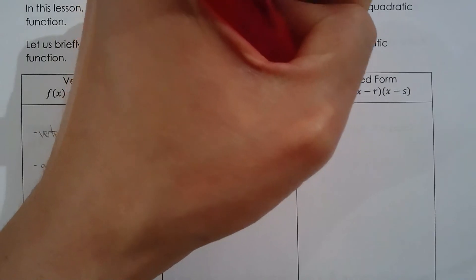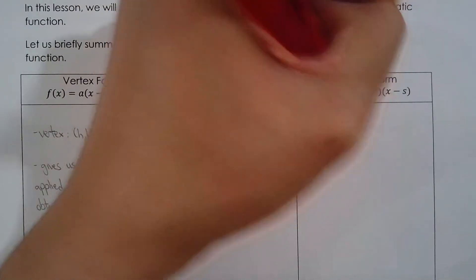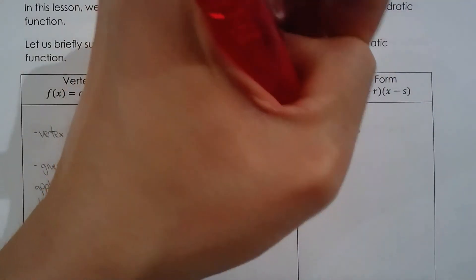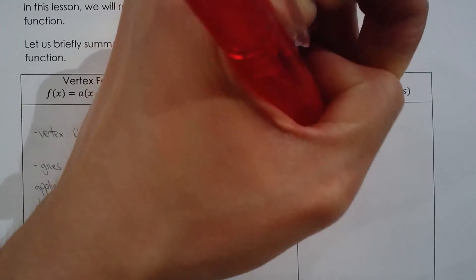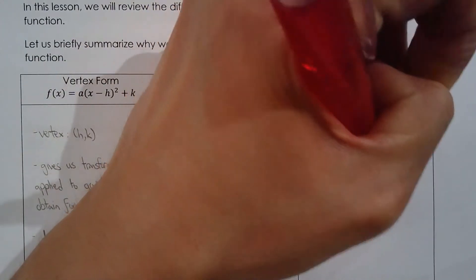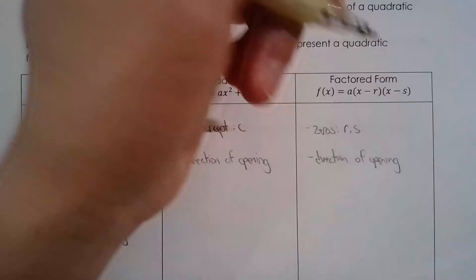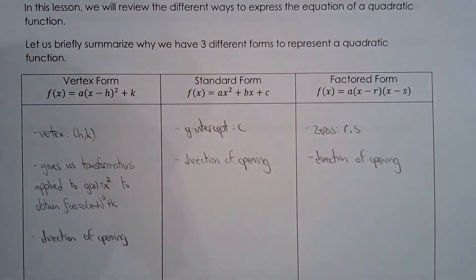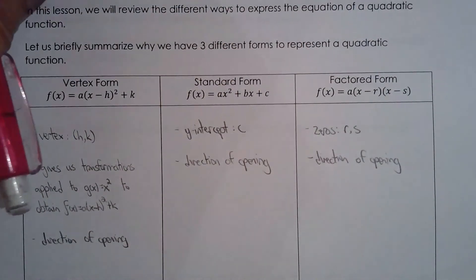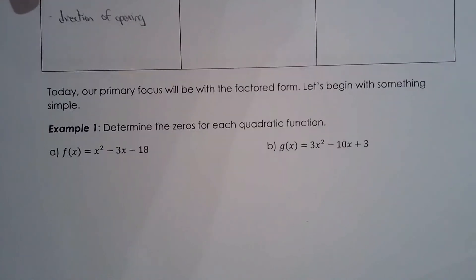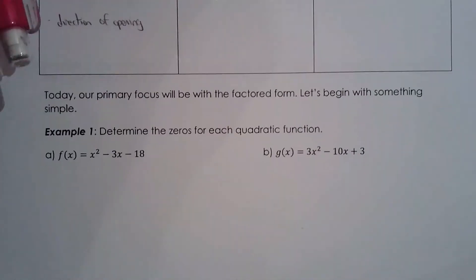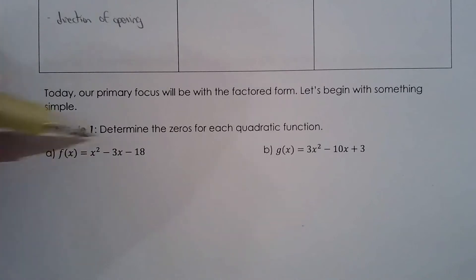And lastly, factored form. Factored form gives me the zeros which are r and s. And just like before, it gives you the direction of opening. So like I said, we are going to focus on the factored form. Unfortunately, these are not in factored form. They're in standard form. So I want to find the zeros and the best way to do it is to change it into factored form.